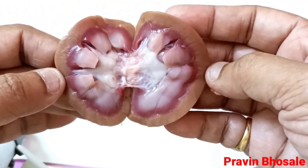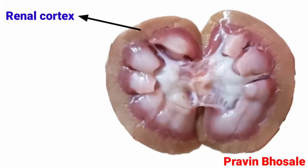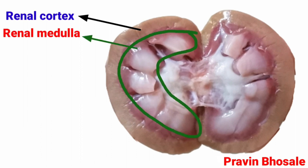Let's revise it again. The outer one is the renal cortex — it is brown in color, a granular region. It consists of the Malpighian body, convoluted tubule, and blood vessels, and ultrafiltration takes place in this region. The pale red-colored region is the renal medulla, and it has a striated appearance.